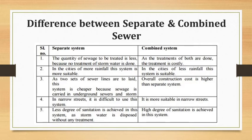In cities with more rainfall, the separate system is more suitable, while in cities with less rainfall the combined system is more suitable. Regarding construction cost, the separate system is cheaper due to smaller sewer diameters, whereas the combined system has an overall higher construction cost due to the large dimensions of sewers required.